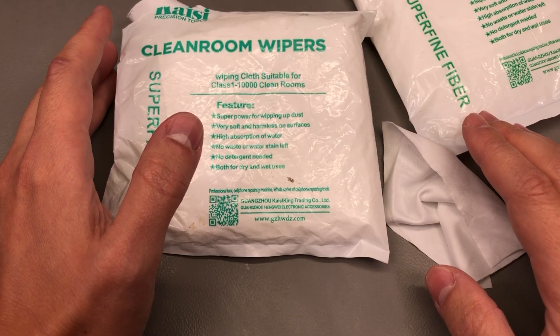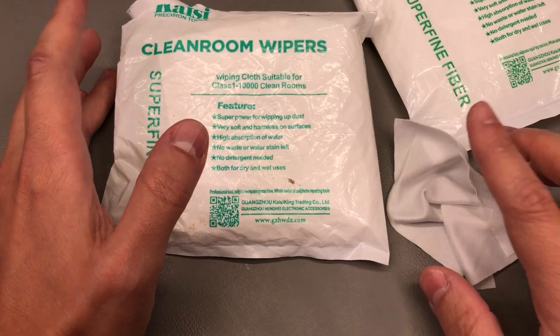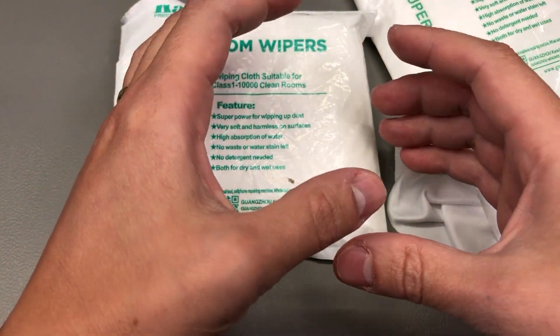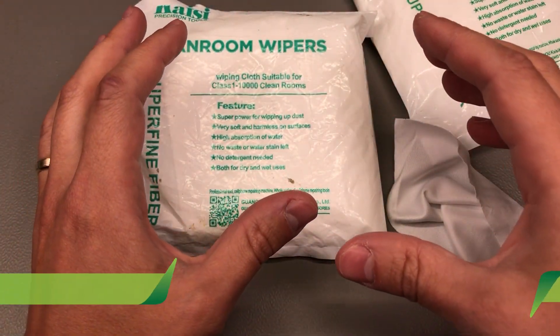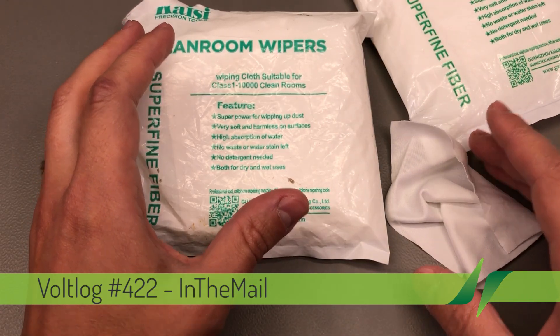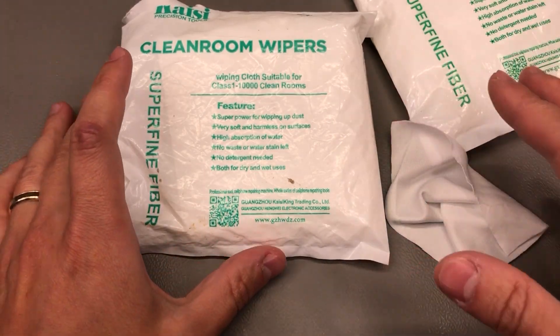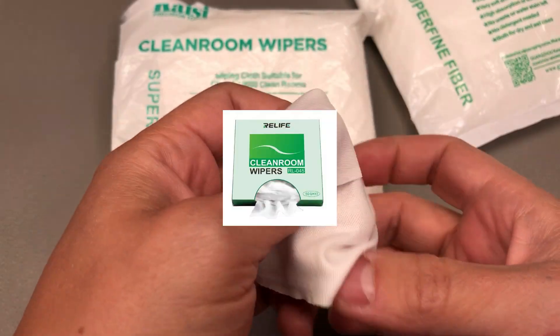My first item is a set of these cleanroom wipers. If you remember in the past I used to get these little green box ones from Blue Relife brand, but I couldn't easily find those on a quick Aliexpress search so I ended up getting these ones which have a similar cost. They're from a different brand but they just look and feel identical.